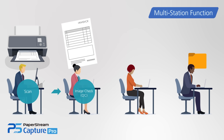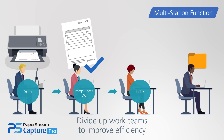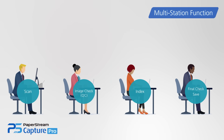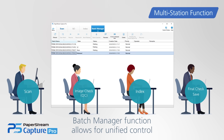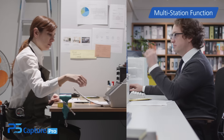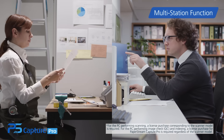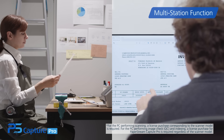PaperStream Capture Pro also features a multi-station function. Avoid workflow delays by assigning different tasks to different stations. The Batch Manager function allows for smooth and unified control of worker assignments, work progress, data storage locations, and prioritization. This also promotes efficient work sharing, greatly reducing the burden placed on operators.